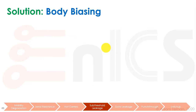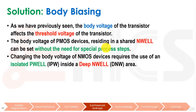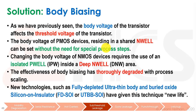A solution that used to be very common in academia was body biasing. The body voltage of the transistor affects the threshold voltage — there's a VSB term in the VT formula. We can play with this in PMOS devices because we have an N-well. We can also use a deep N-well with an isolated P-well inside to control the body voltage of an NMOS transistor. However, the effectiveness of body biasing is thoroughly degraded with process scaling, so it now has almost no effect. New technologies such as fully depleted SOI (FDSOI or UTBBSOI) have given this technique new life.